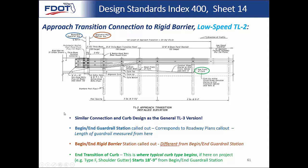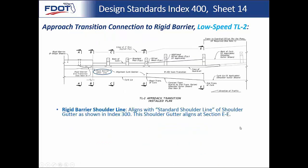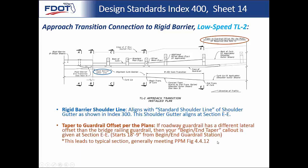The end transition of curb is basically the same as for TL3. By the time you get there, the alignment curb shape matching the barrier starts to transform and can become shoulder gutter, type F, or stop altogether for a flush shoulder. We have the rigid barrier shoulder line projected out, same as TL3. With all these approach transitions, this whole section is parallel to the roadway — that's the way they're crash tested — and that's why the taper begins at section EE to get to your typical section. Look at PPM figure 4.4.12, and then the end transition of curb also occurs there.